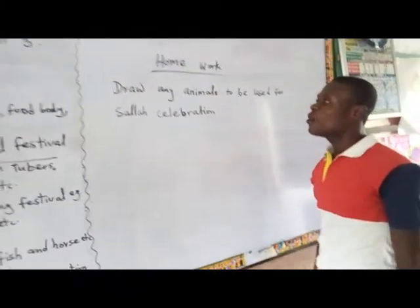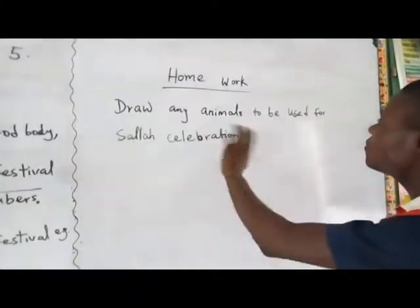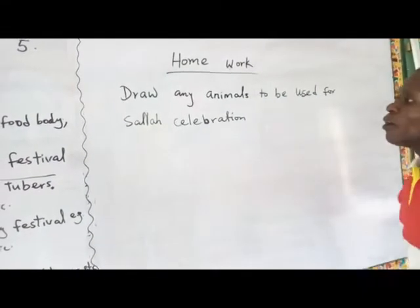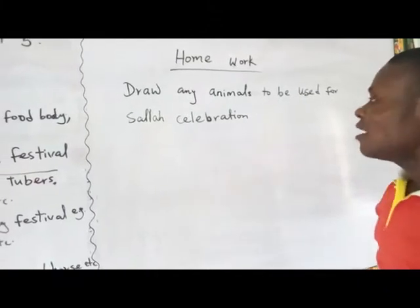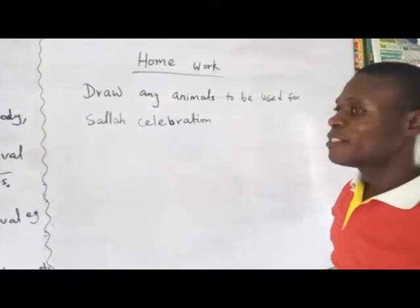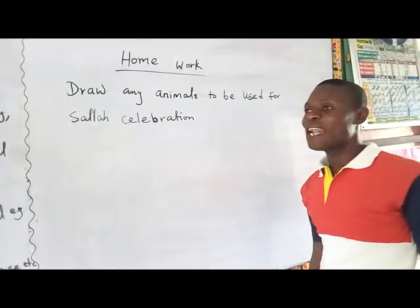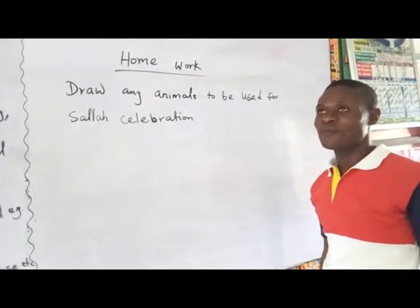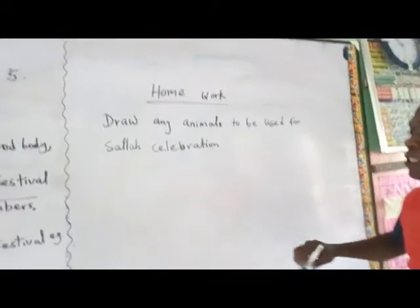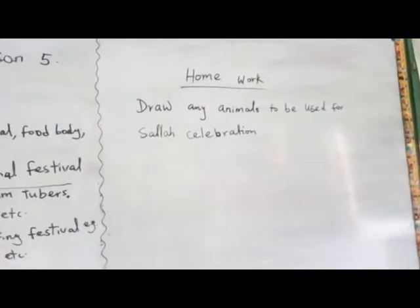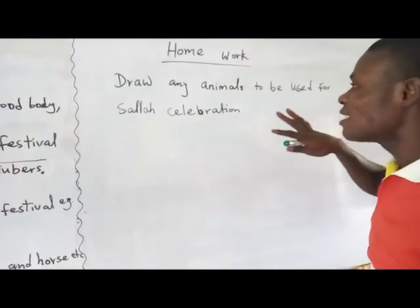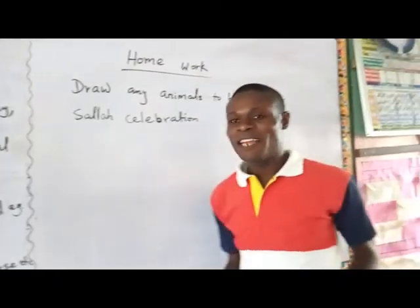Please, I want you to draw a very beautiful animal of your choice that would be used for Salah celebration. Any of these animals used to celebrate Salah — I want you to draw any of them fully. Be a very beautiful one. Choose a particular one; it could be ram, it could be goat, it could be cow — any one of your choice. Draw it beautifully. I want to see it. Thank you. Have a nice day.